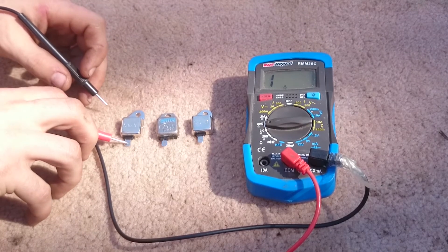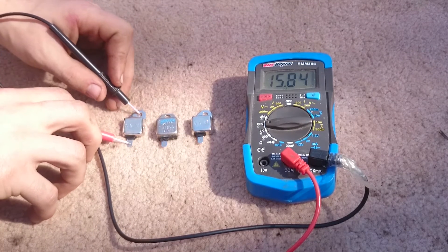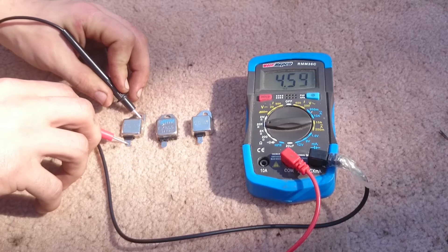So we're going to start with the red lead here and the black lead here. I've got the multimeter set to 20k ohms.